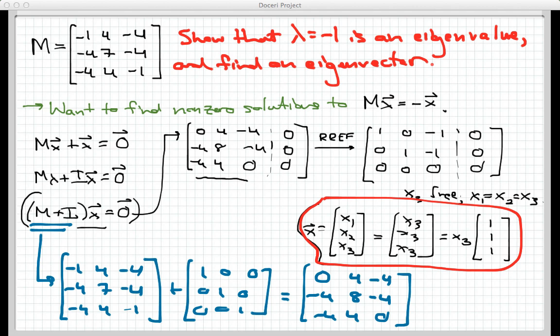The solution tells us a few things. The two most important things it tells us is that, first of all, lambda equals negative 1 really is an eigenvalue. And the reason is I found a non-trivial solution to the original system.